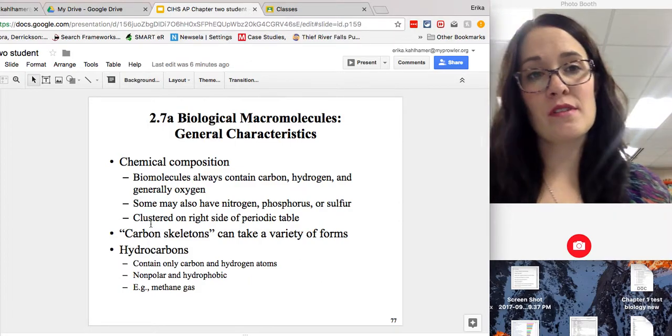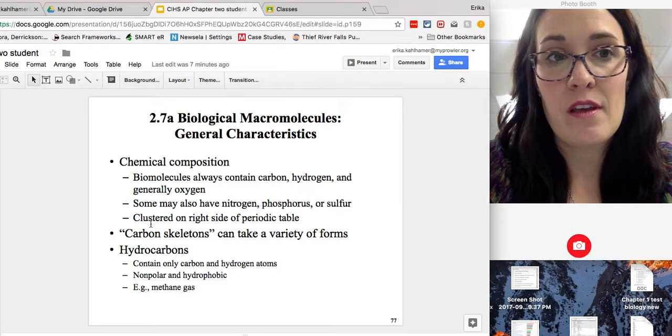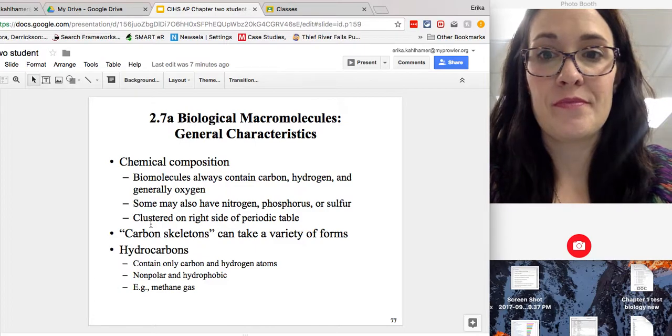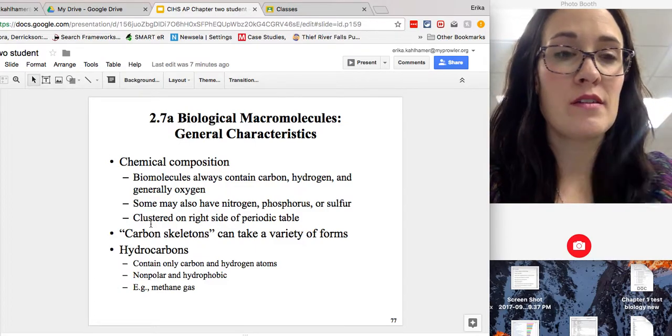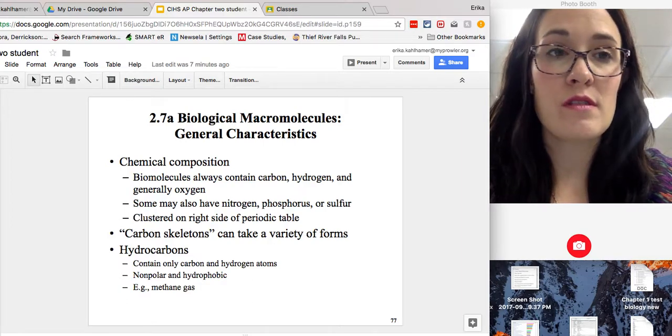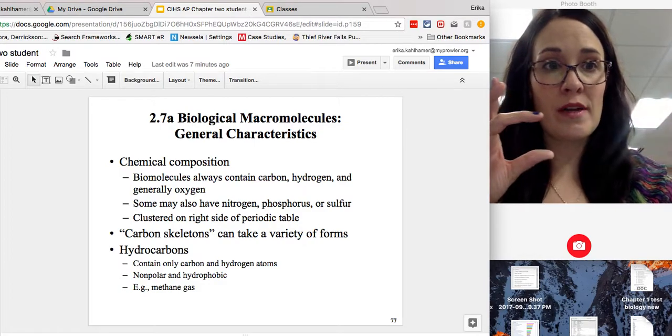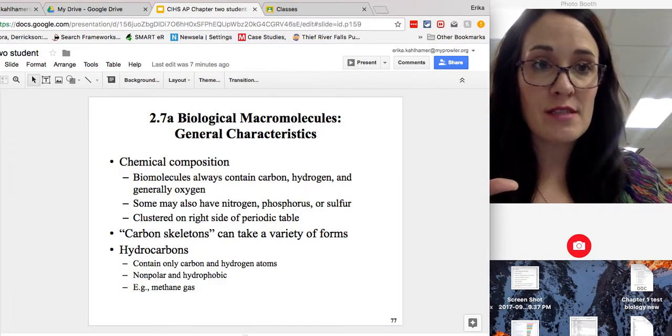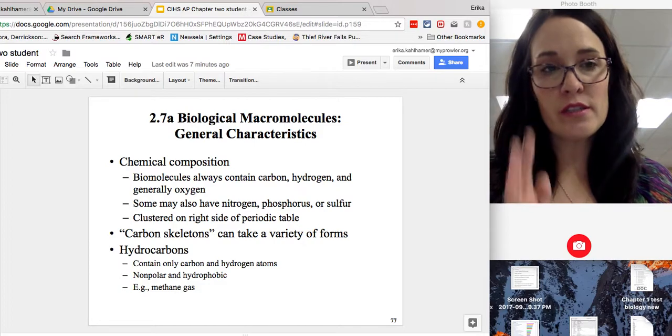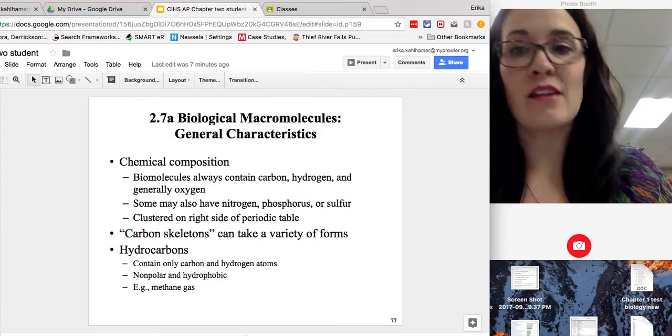These things called hydrocarbons. Carbon can bind or bond with hydrogen. This is called a hydrocarbon. And that bond literally only contains a carbon and a hydrogen. Those are nonpolar, always nonpolar. So you see a whole bunch of carbons attached to a whole bunch of hydrogens, it is nonpolar and it is hydrophobic. Methane gas, CH4, is an example.